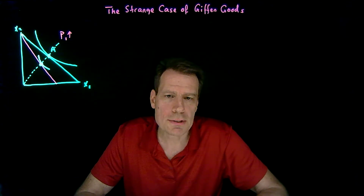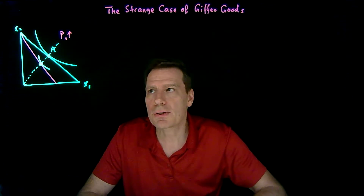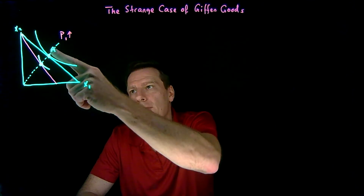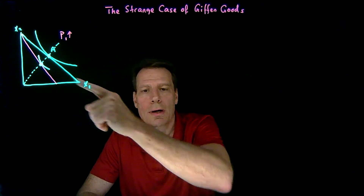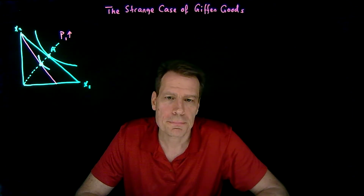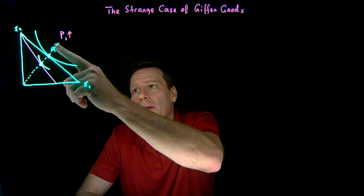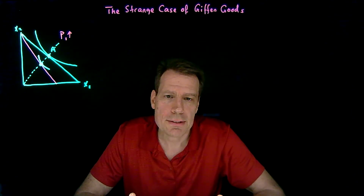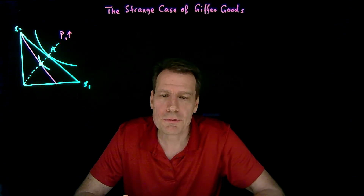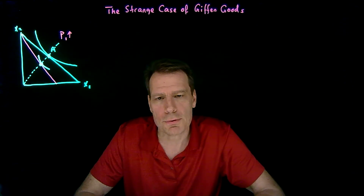The same is true for quasi-linear tastes. You wouldn't want to rush and say, 'let me draw a straight line through point A and conclude where I'm going to end up on the final budget.' Because in order to apply the definition of quasi-linear tastes, you have to see two parallel budgets, so you have to do the substitution effect first.